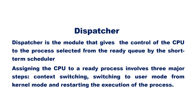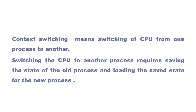Assigning the CPU to a ready process involves three major steps: context switching, switching to user mode from kernel mode, and restarting the execution of the process. Context switching means switching the CPU from one process to another, which requires saving the state of the old process and loading the saved state for the new process. This is done by the context switcher.